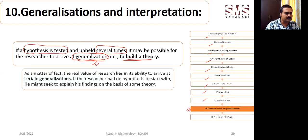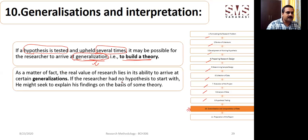As a matter of fact, the real value of research lies in its ability to arrive at certain generalizations. If you are not able to generalize your result, then the purpose is going to be defeated. Whatever you have found during your research, if it is not going to be generalized, the entire purpose would be defeated. If everything you have found can be generalized to a larger population, then the purpose will be solved.